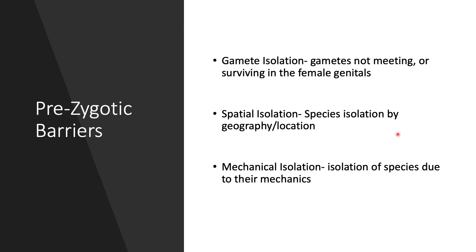There's also spatial isolation, where species are isolated by geography or location. Some types of snakes, for example, are separated by water or different land areas, so they never actually meet and therefore can't mate. They stay within their own groups.